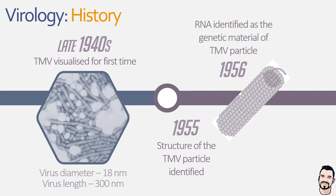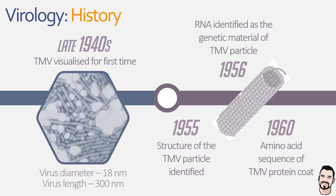Just a year later, RNA was identified as the infectious unit of the virus particle. And a few years after that, in 1960, the amino acid sequence of the tobacco mosaic virus protein coat was determined, making it one of the very first proteins to be sequenced, and pushing forward many aspects of microbiology, biochemistry, genetics, and of course, virology.